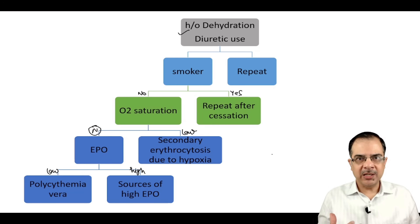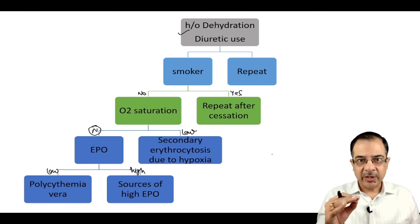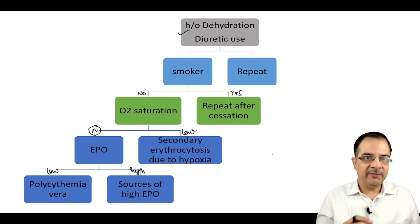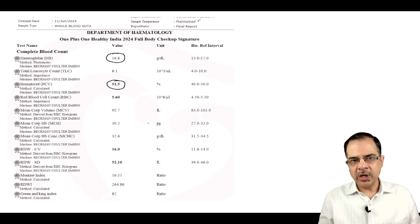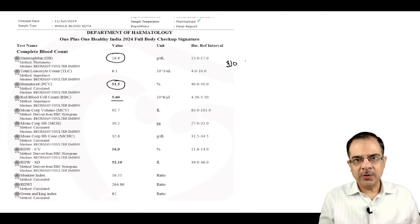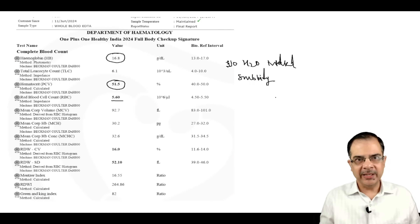Note: per textbooks, true erythrocytosis is confirmed by elevated RBC mass via radioisotope methods. A practical alternative: hematocrit more than 16 in males and more than 15 in females suggests high RBC mass. Case example: hemoglobin 16.8, PCV elevated, RBC 5.6. History revealed low water intake. After increasing fluid intake, CBC repeated two weeks later came out almost normal.